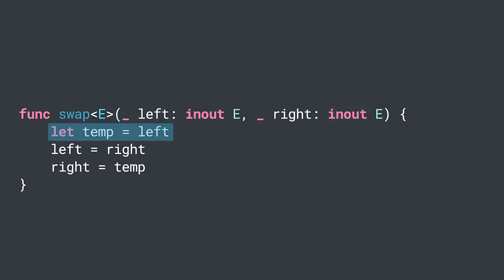I use a variable to store the value of the left argument temporarily. Then I replace the value of the left parameter with the contents of the right argument. At this point, the original value of the left parameter would be lost. That's why we need to store it in the temp variable. Finally, I assign the value of the temp variable to the right argument.